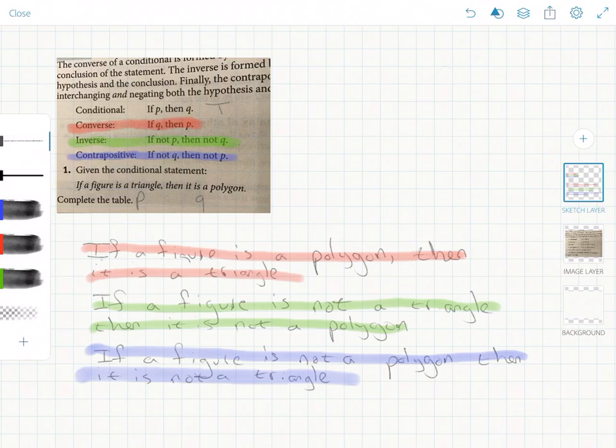And let's look at the converse. In red, if a figure is a polygon, then it is a triangle. But what if a figure is a square? That's a polygon. So that statement is false. So the converse in this case is false.